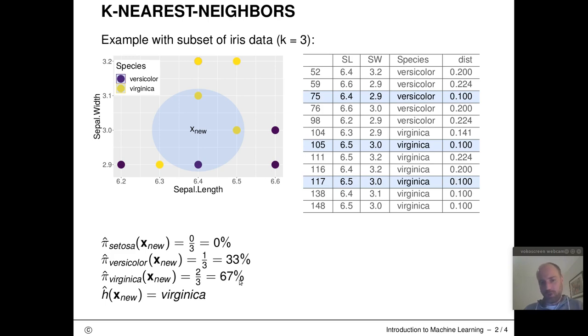And if you want to now pick a discrete class assignment for x new, this is probably going to be virginica, because virginica has the highest posterior probability.